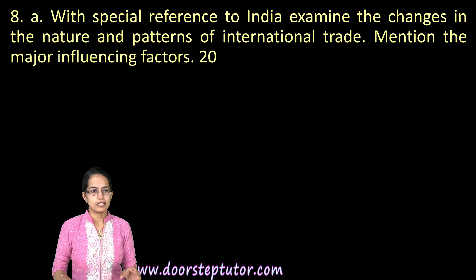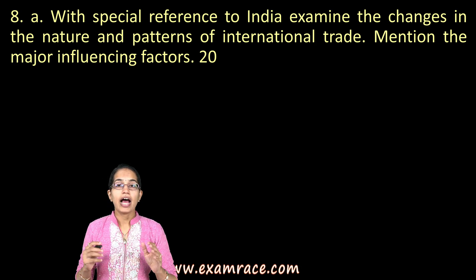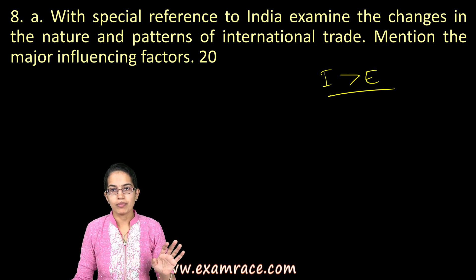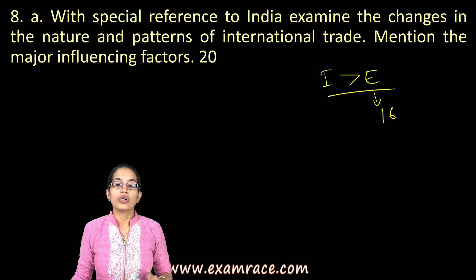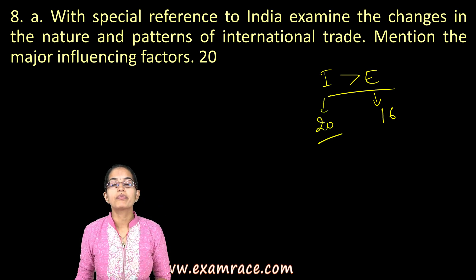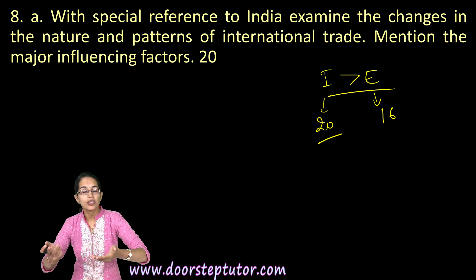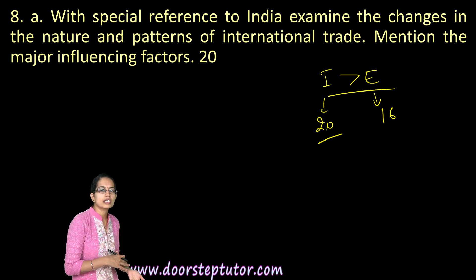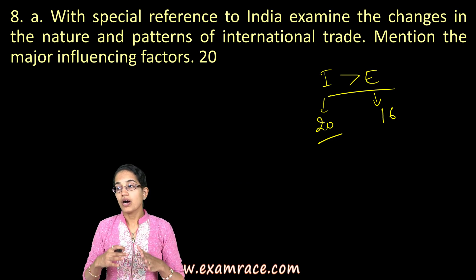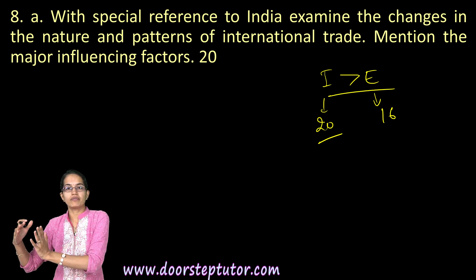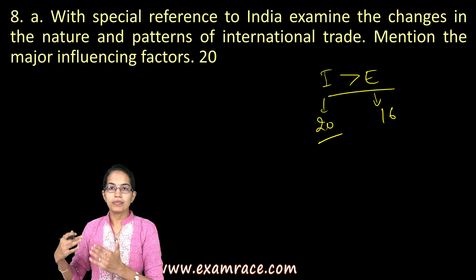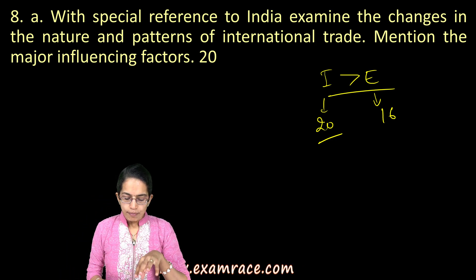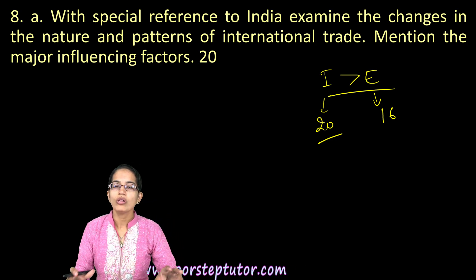The next question examines changes in India's international trade patterns with special reference to India. India's foreign trade has drastically changed — imports have expanded faster than exports, which is unfavorable. Exports have increased 16 times but imports have jumped 20 times. Even agricultural products are being imported despite 70% of the population relying on agriculture. Oil imports are significant, and a substitution from non-renewable to renewable energy generated within the country — solar and wind — is required. The balance of payments has been drastically disturbed as a result.